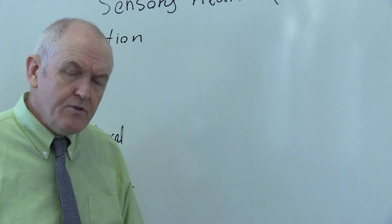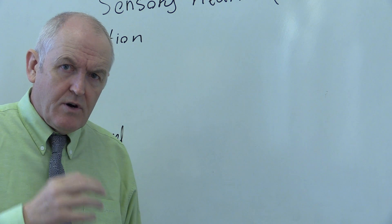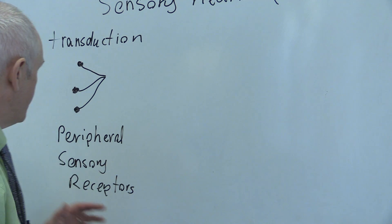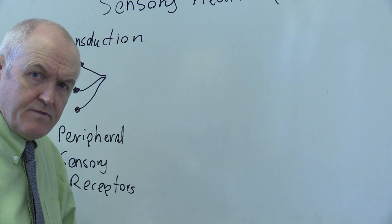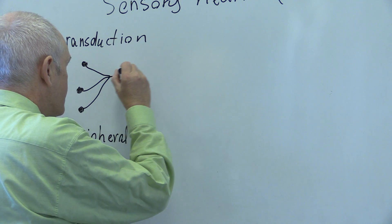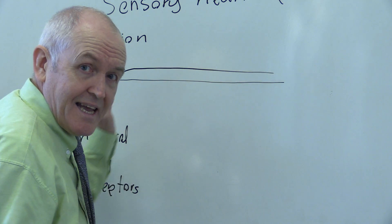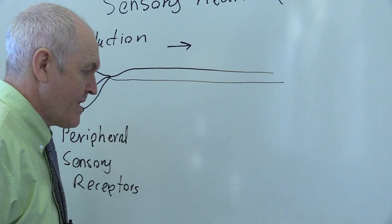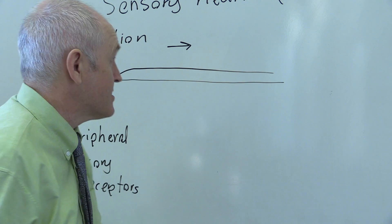In the motor neuron, the new nerve impulse was generated in the cell body of the motor neuron in the motor cortex of the brain. Here, the new nerve impulse is actually generated in the periphery as a result of this process of transduction. Then there is a nerve fiber carrying this information in towards the central nervous system, and because it is carrying information inward, this is called an afferent system.